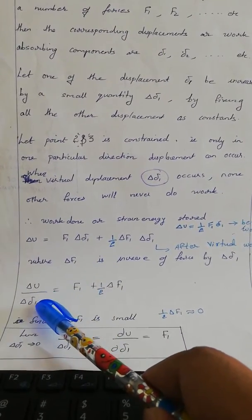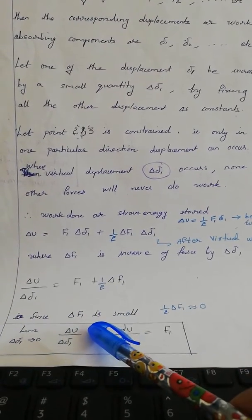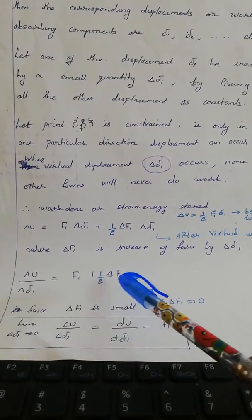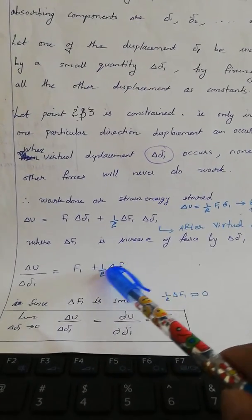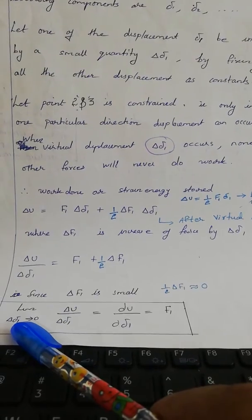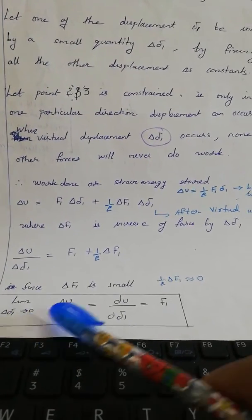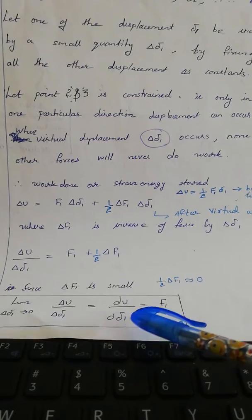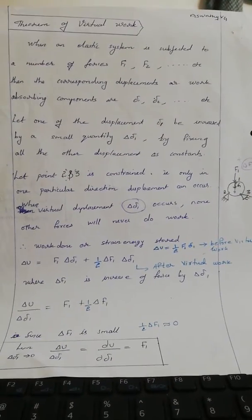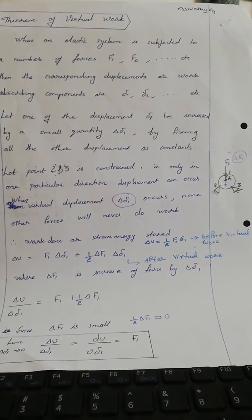Taking delta-delta-1 outside, and since delta-F1 is very small we can neglect the second term. When we apply the limit and change to partial derivative notation — as the limit tends to zero — we get: ∂U / ∂δ1 = F1. This is the principle of virtual work.